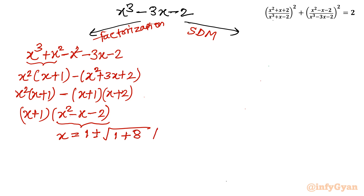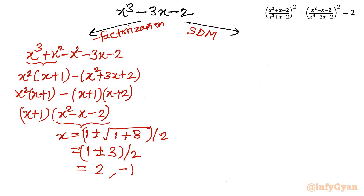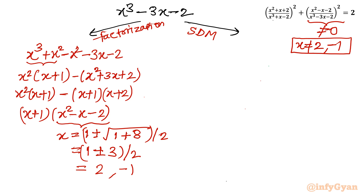This gives x = 4/2 = 2 and x = -2/2 = -1. So from the second denominator, x ≠ 2 and x ≠ -1. Combined with the first exemption, the domain excludes x = 1, x = 2, and x = -1.